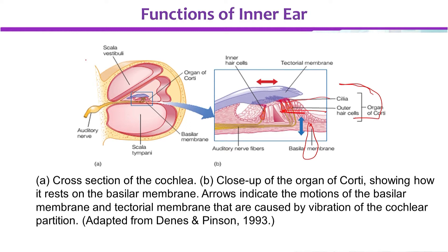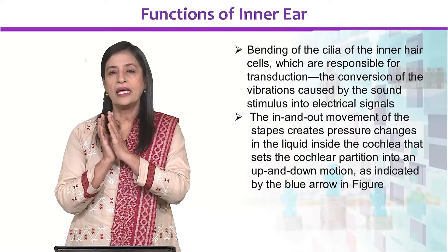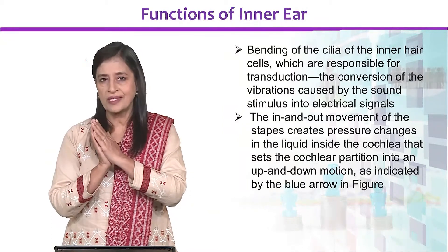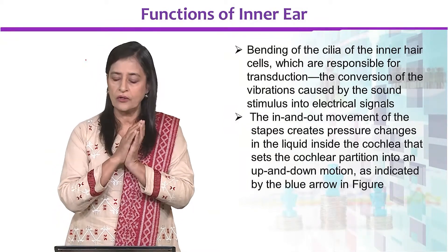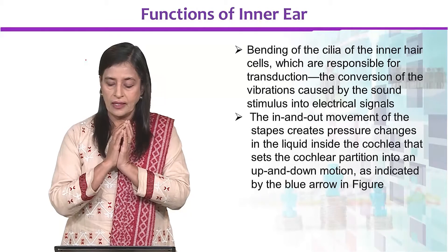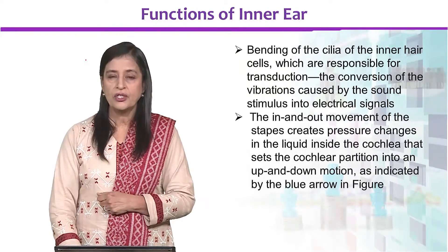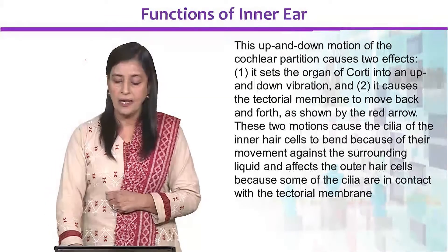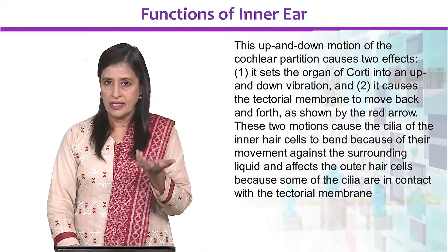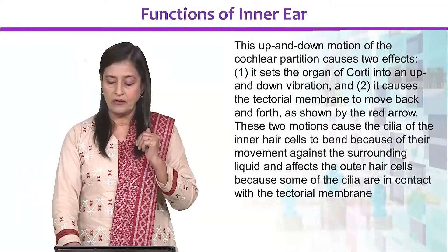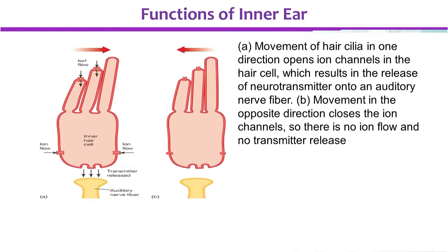जो बालों का हिलना है, अगर एक side को हिलते हैं तो transduction शुरू होती है, और दूसरी side को हिलते हैं तो वो बंद हो जाती है। यह in and out movement जो है, pressure changes liquid में create करती है, इसकी वजह से organ of Corti की up and down vibration होती है। जैसा के हमने arrow में देखा था, opposite direction से ion channels बंद हो जाते हैं, तो उसके बाद कोई ion flow और कोई transmitter release नहीं होती।